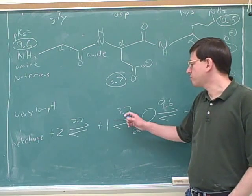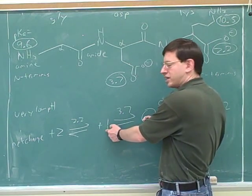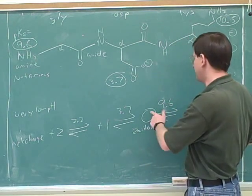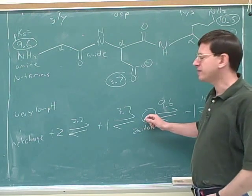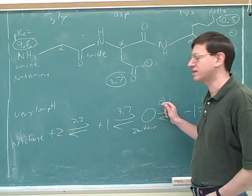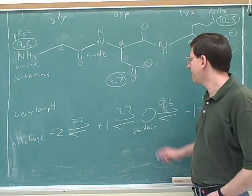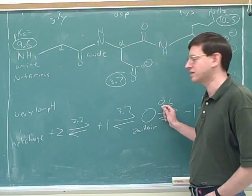Remember that if the pH was 3.7, we would have about equal amounts of these two things. And if the pH was 9.6, we would have equal amounts of these two things. So how should we get the maximum amount? Well, maybe it's kind of logical that that would be when the pH is between 3.7 and 9.6. In fact, it seems logical to me that the maximum Zwitterion is when we're exactly between 3.7 and 9.6.